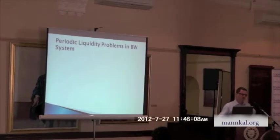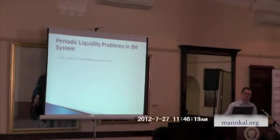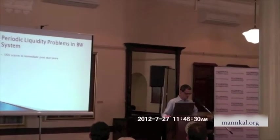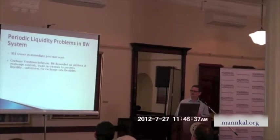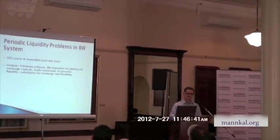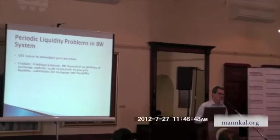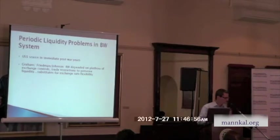Let's look at some of the liquidity problems more deeply in the Bretton Woods system, which have something to do with trade policy and free trade sentiment during this period. The US dollar was scarce post-war. Countries were permitted to discriminate against US influence because they couldn't easily acquire US dollars. Critics — including Frank Brown, then Milton Friedman, and later Harry Johnson — argued that the Bretton Woods system depended on a plethora of exchange controls on capital movements across borders, and that trade restrictions were there to preserve liquidity and were substitutes for more flexible exchange rates.